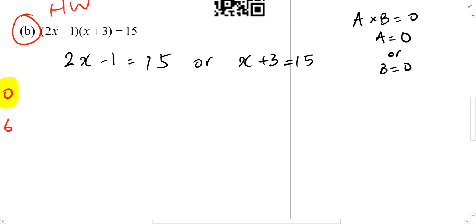Yes, John? 15 has multiple factors. What are some of them? 3 and 5, what else? 1 and 15. So are you suggesting that my answer should be 2x minus 1 equal to 15, or let's change this to an n, x plus 3 equals to 1, should this be the answer?